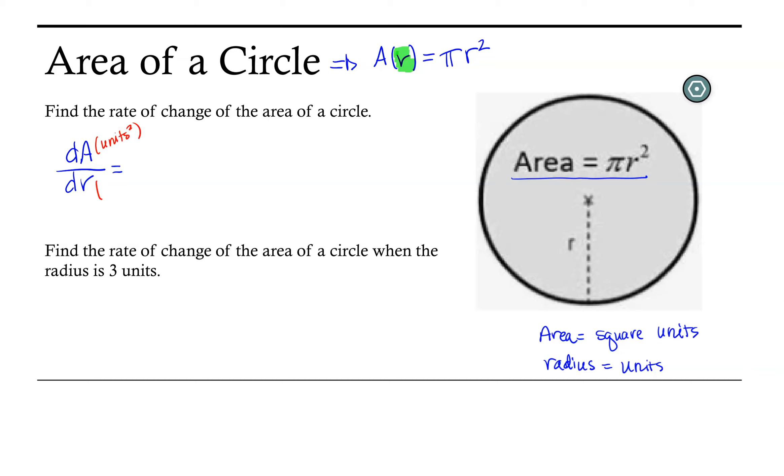over the change in radius, which is simply measured in units. So let's go ahead and find this derivative. So dA/dr is equal to π by the constant multiple rule, and then we take the derivative of r², which gives me 2r.